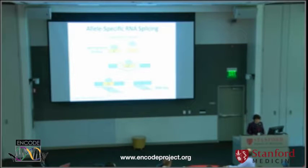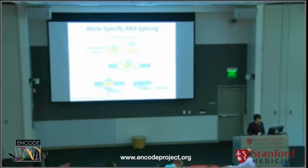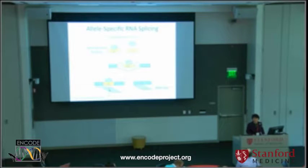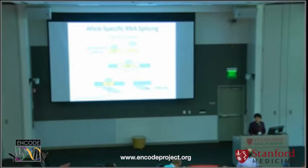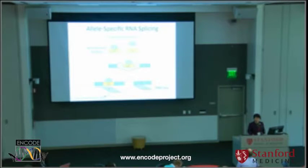In the RNA-seq reads, what we observe in poly-A selected RNA-seq is that the reads contain predominantly the C allele, because the G allele induced exon skipping and you cannot observe that in the RNA-seq reads. Given this rationale, we developed an approach published in 2005 to identify exonic SNPs that may affect splicing.